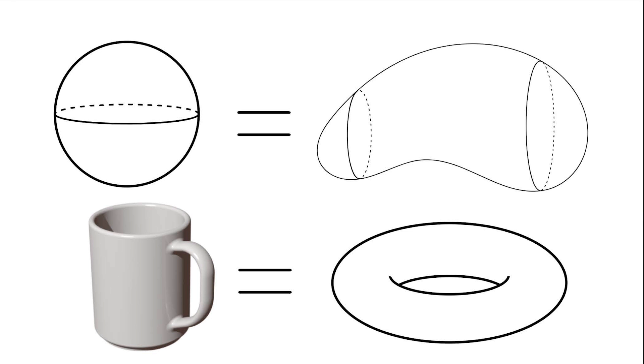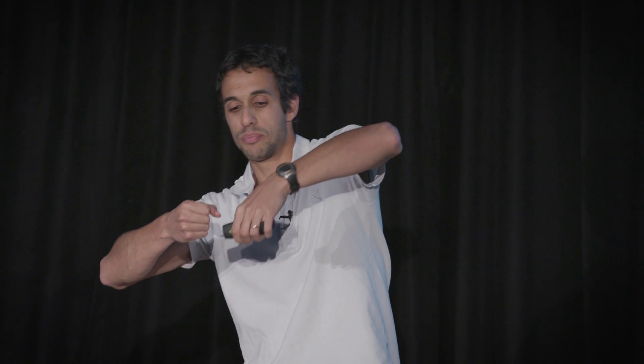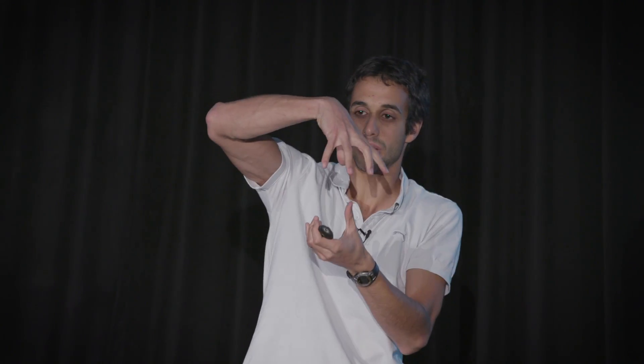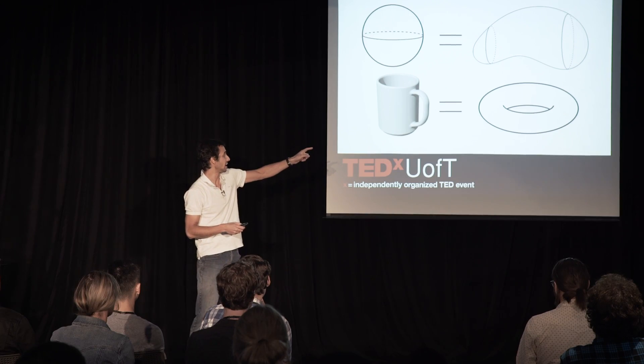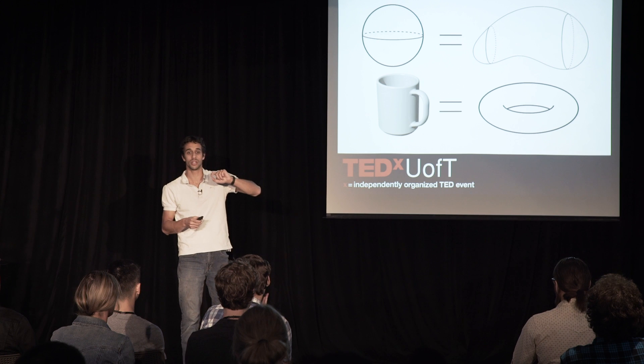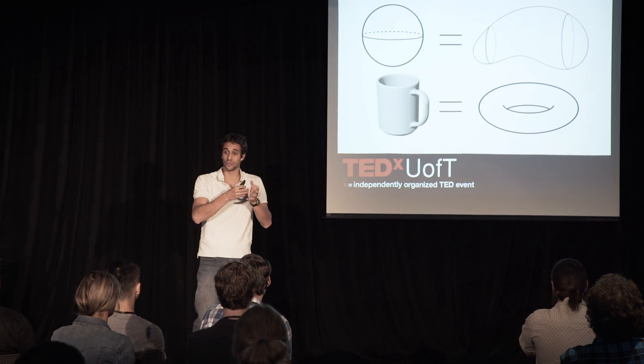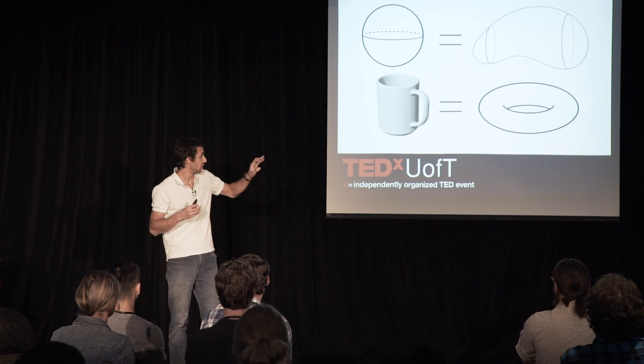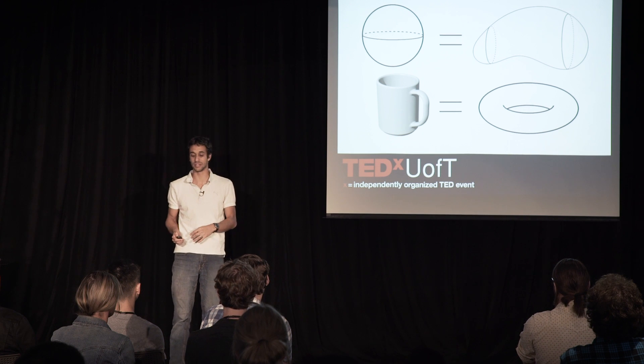Another example is that a coffee cup — I'm talking about the outside surface of a coffee cup — is the same as a doughnut. Because I can take my coffee cup, put my hand through the handle, and pull out the inside, and then I've got sort of a handle with a blob, and then squish that blob around the handle. Now the hole through the doughnut is what used to be the hole through the handle of the coffee cup. In this world, a coffee cup and a doughnut are going to be considered to be the same.